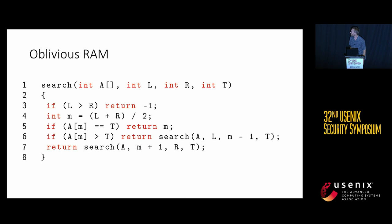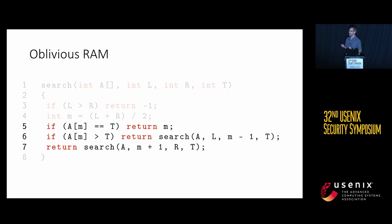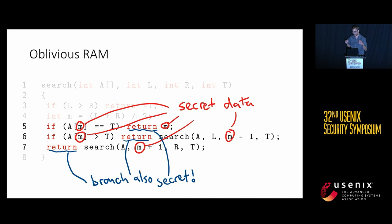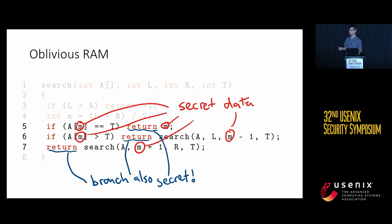Imagine implementing a binary search in an MPC. It's hard — you have comparisons based on your secrets, and the outcome tells you to jump to one of two different addresses. If you leak which address you jump to, you're leaking information about your secrets. The normal trick in MPC when you encounter a branch is to follow both branches and ignore the one you didn't want. But in binary search, each branch branches again, and you ultimately end up with a convoluted linear scan over the data.